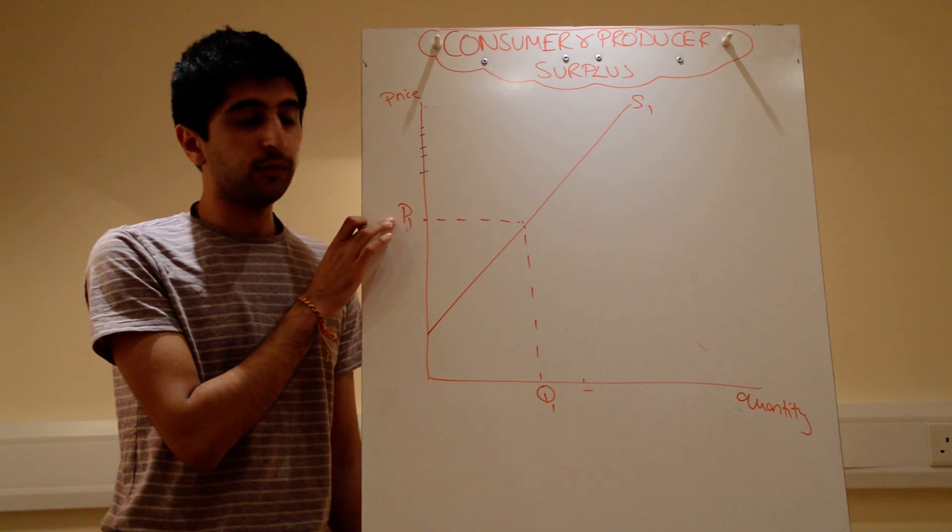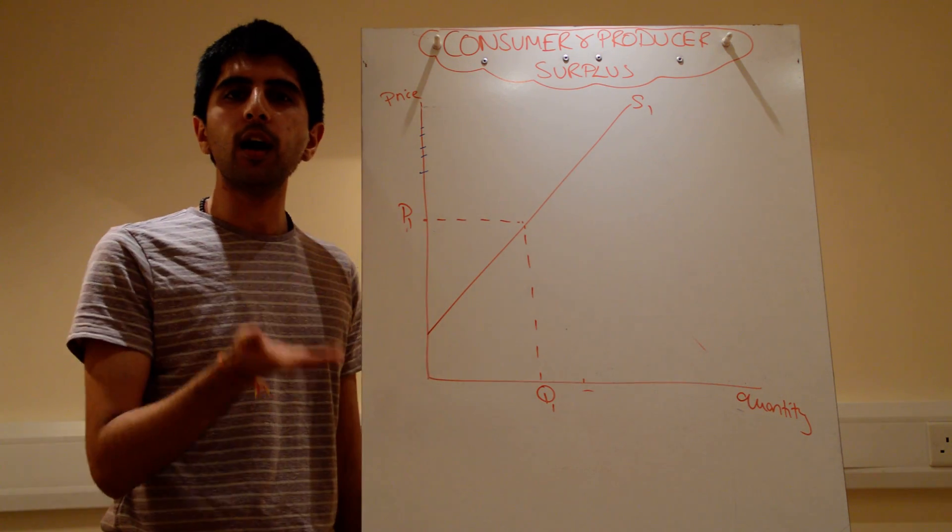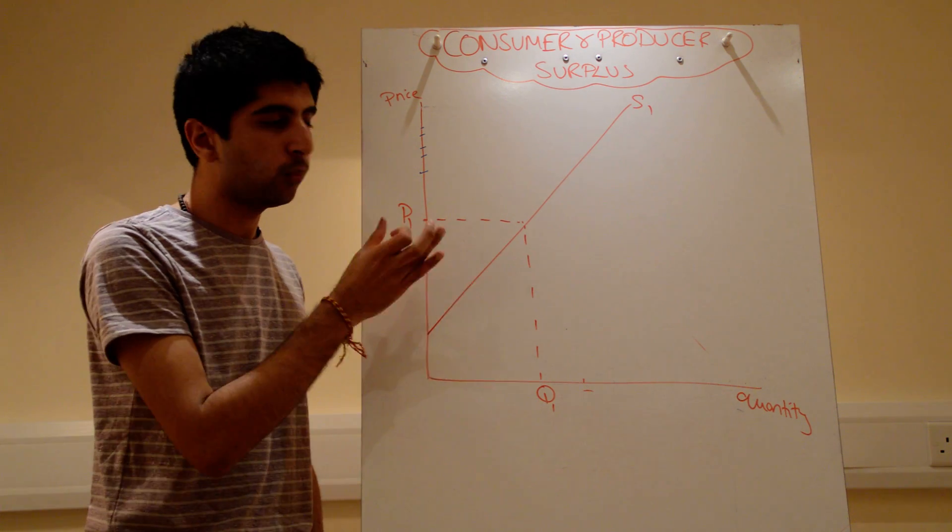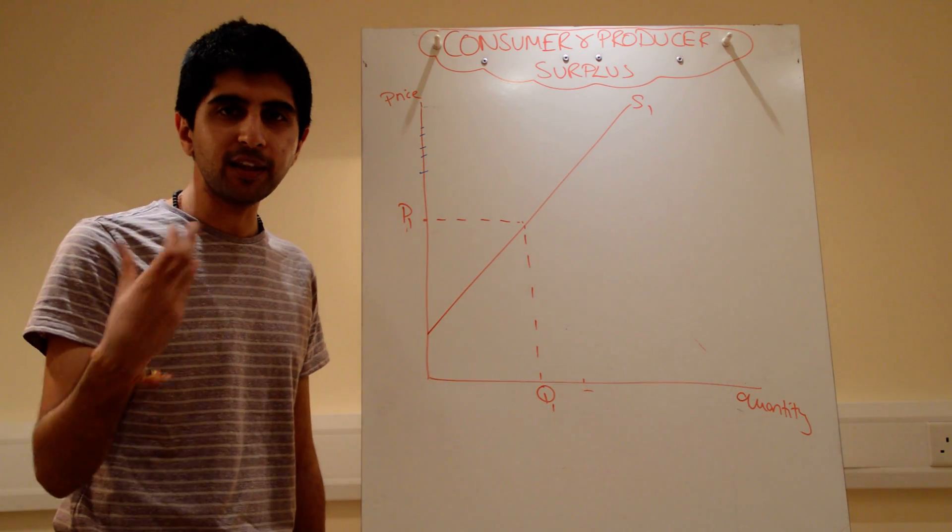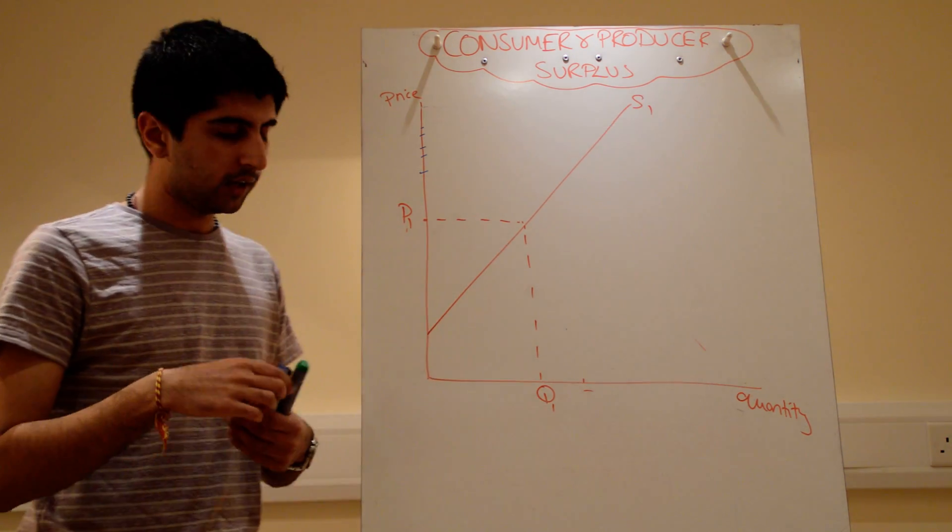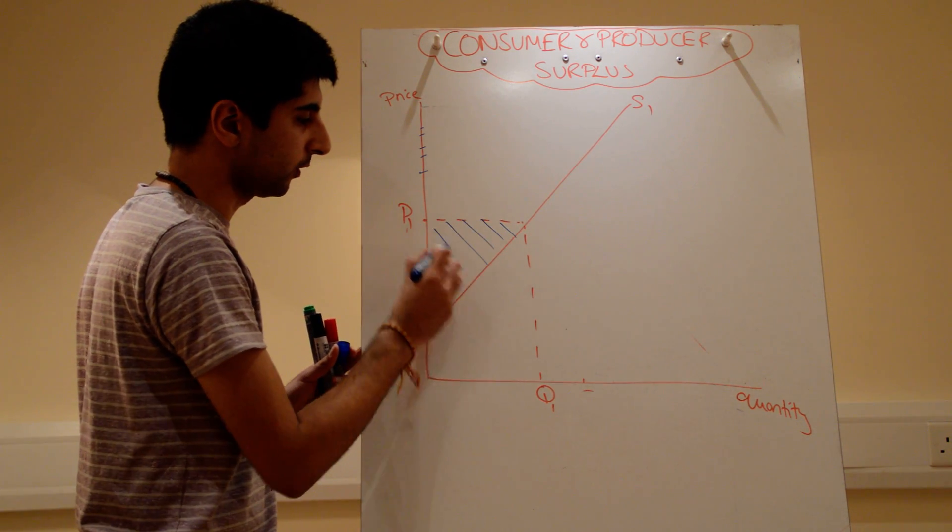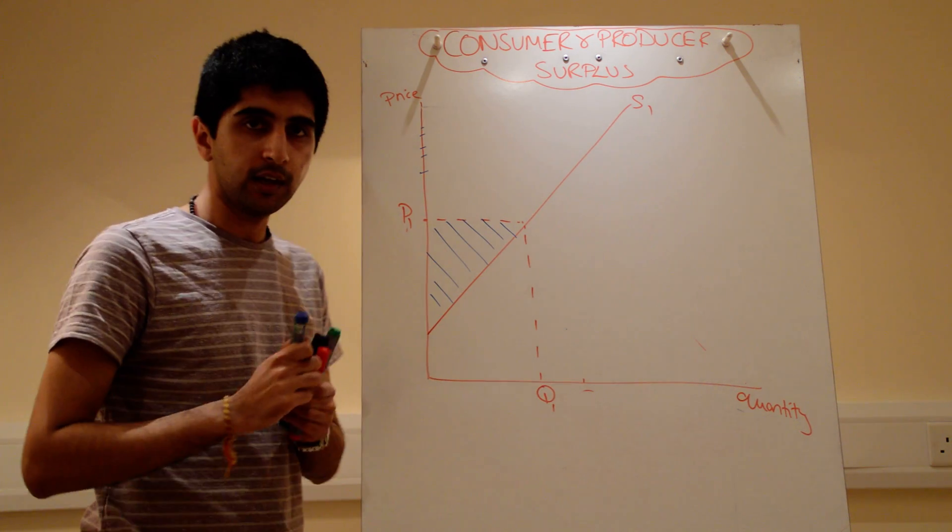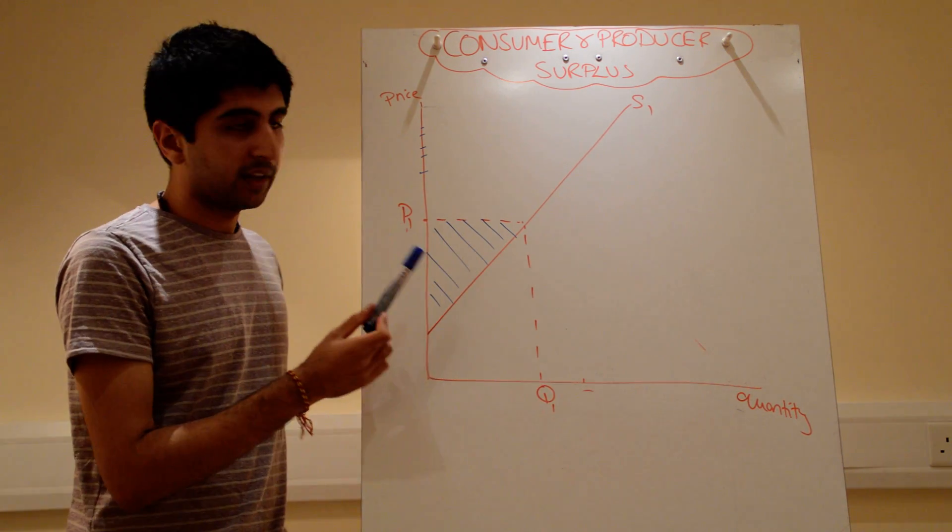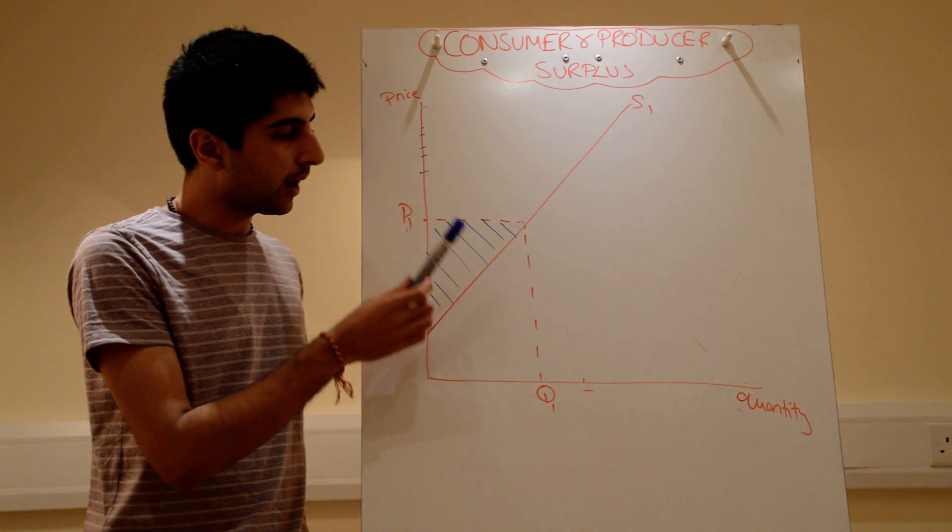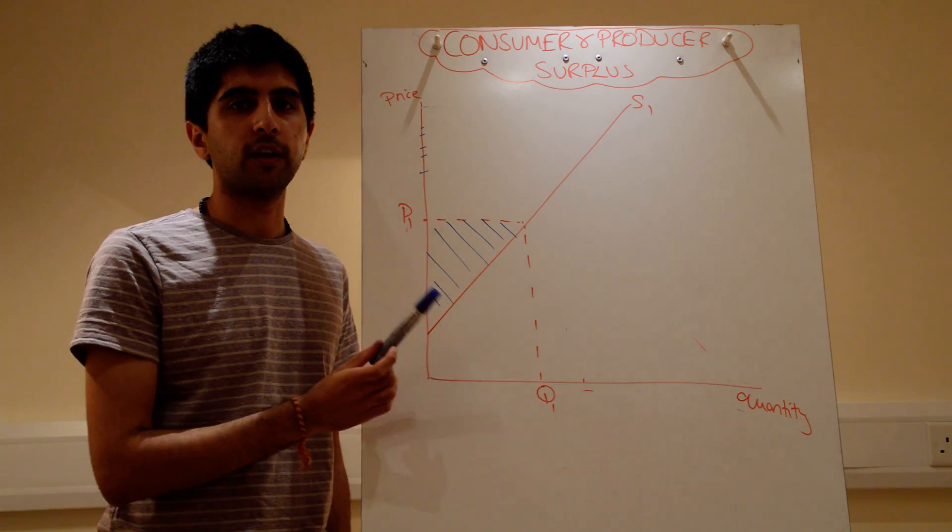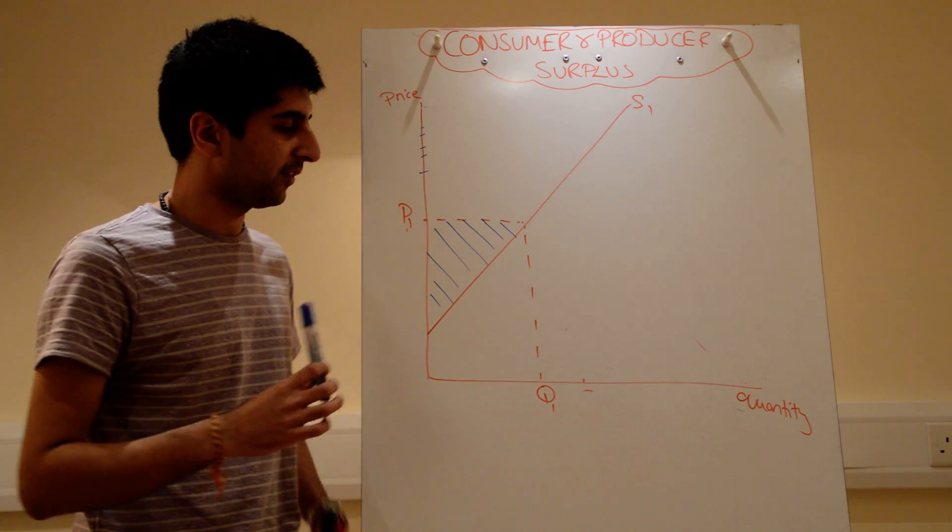Well, the price they actually receive is at P1. They're receiving a higher price than what they would have been willing and able to supply. So they're benefiting by getting a higher price. All right, how much are they benefiting? They're benefiting by this entire triangle down here. That's how much they're benefiting from. So it's the area above the supply curve but below the price. That entire triangle is how much producer benefits.